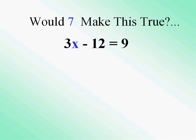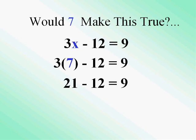Let's see if 7 can be put in and make this sentence true. Instead of x, I'm going to erase the x and put a 7. Now, does 3 times 7 minus 12 equal 9? That's what I'm asking. Well, 3 times 7 is 21, and 21 minus 12 does equal 9. So putting in 7 makes this sentence true. So we say that 7 is a solution to the equation.